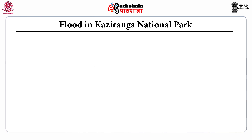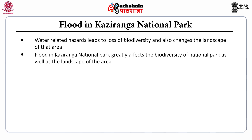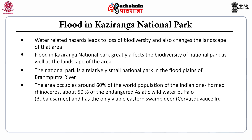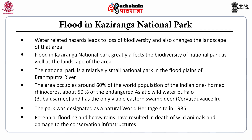Now a few case studies related to water-related hazards. First, flood in Kaziranga National Park. Water-related hazards lead to loss of biodiversity and changes in the landscape of an area. Floods in Kaziranga National Park greatly affect the biodiversity and landscape of the area. The park is located in the flood plains of the Brahmaputra River and occupies around 60% of the world population of Indian one-horned rhinoceroses, about 50% of the endangered Asiatic wild water buffalo, and has the only viable eastern swamp deer. The park was designated as a Natural World Heritage Site in 1985. Perennial flooding and heavy rains have resulted in death of wild animals and damage to conservation infrastructure.